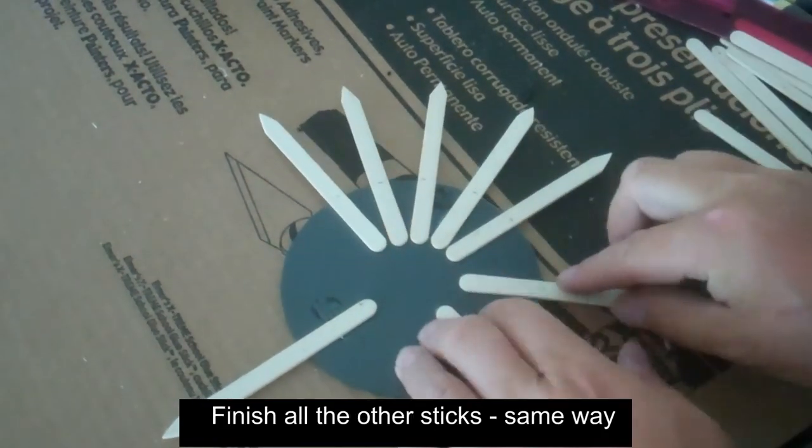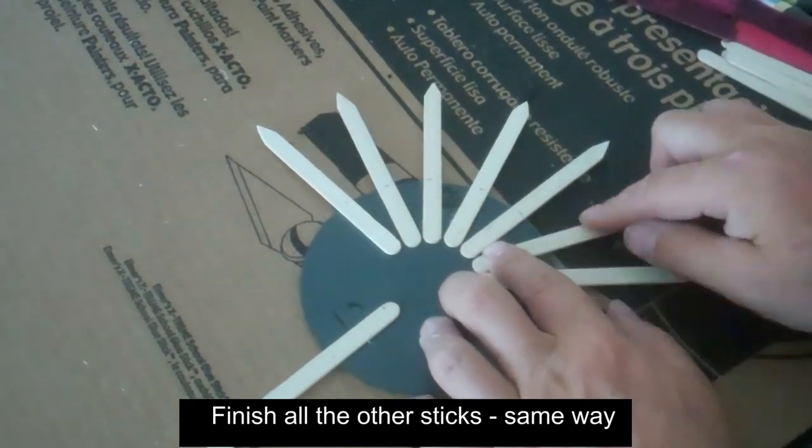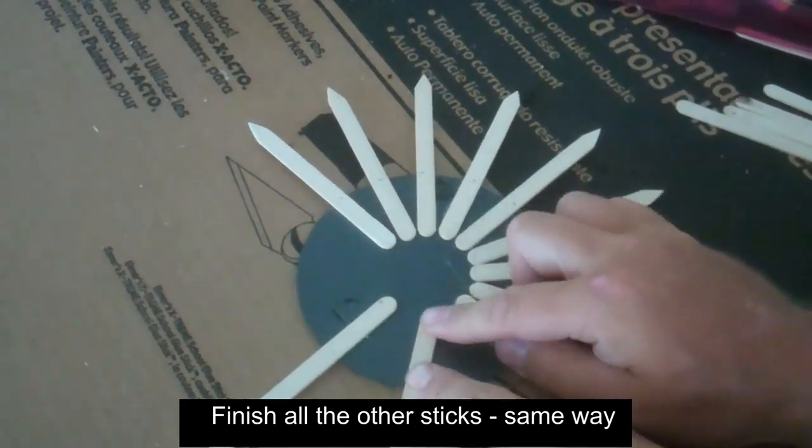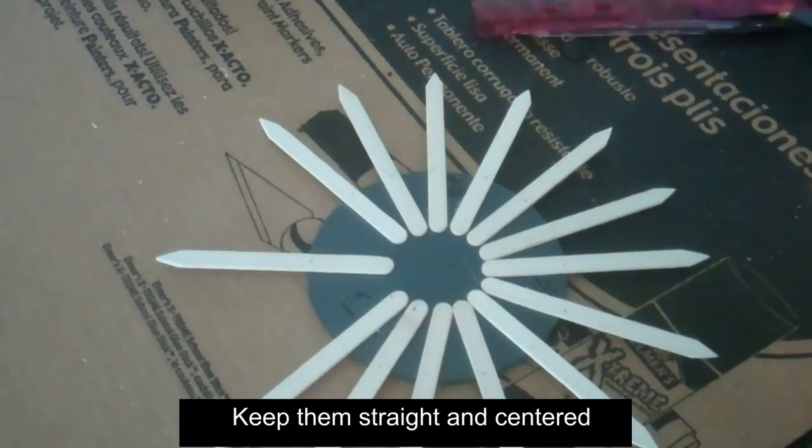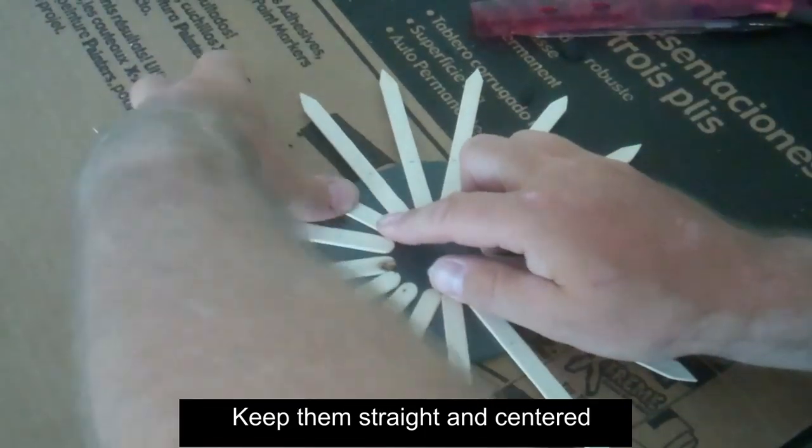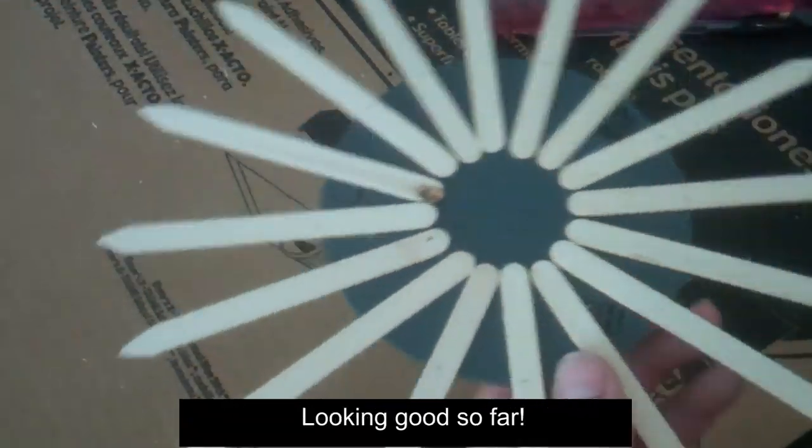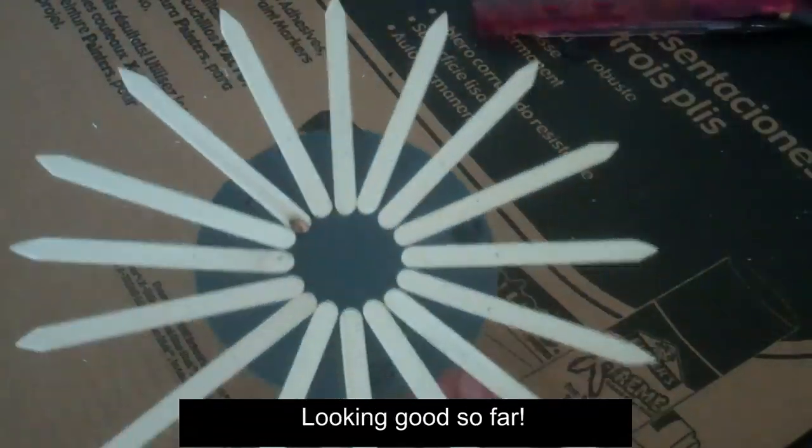Continue this process with the remaining popsicle sticks all around the mirror until you are finished. You can see you have a perfectly formed circle of sticks when you are finished.